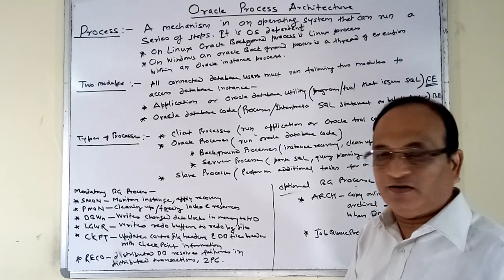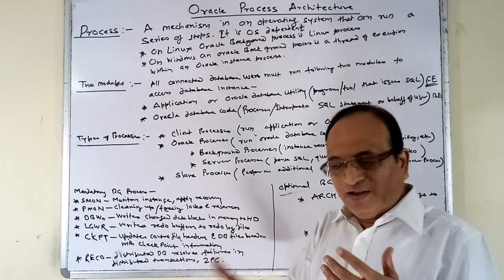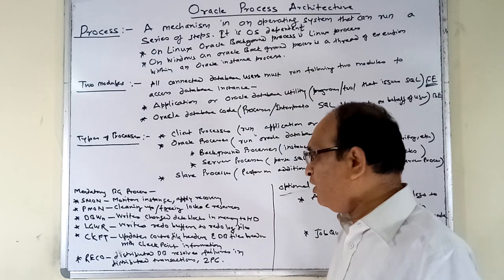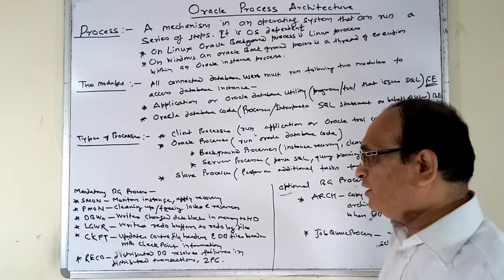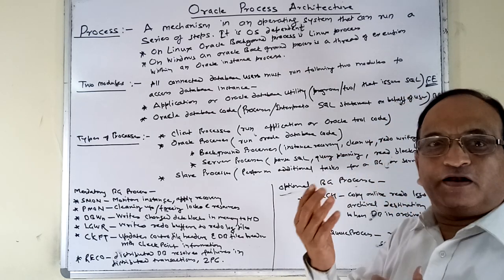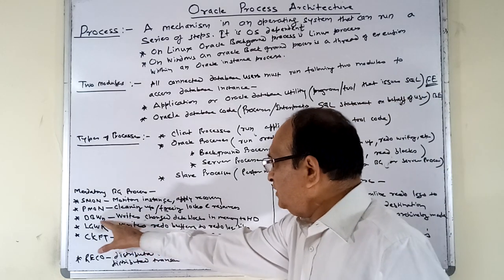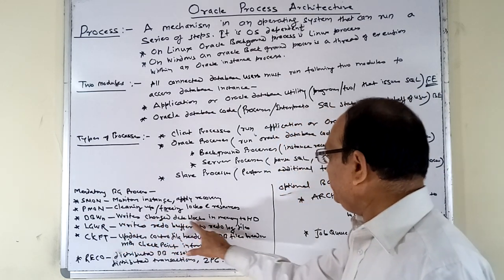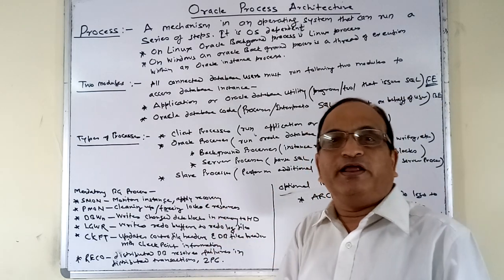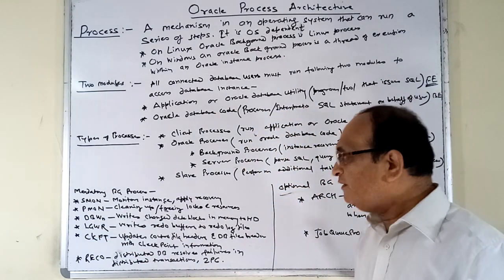Next is the DBWR (Database Writer) process, also called DBWn. When a user performs a transaction and makes changes to data in data blocks, those modified blocks — called dirty blocks — must be written back to the data files. This write event is called a checkpoint. The DBWR process writes changed data blocks from memory to the data files, and so DBWR is responsible for performing checkpoints.